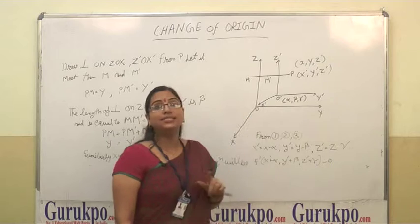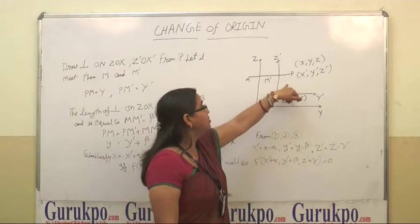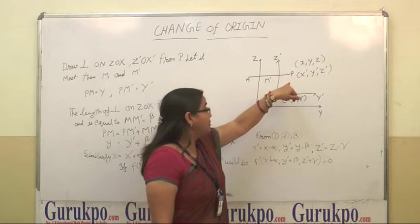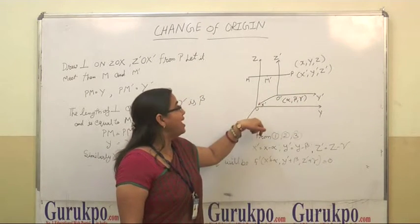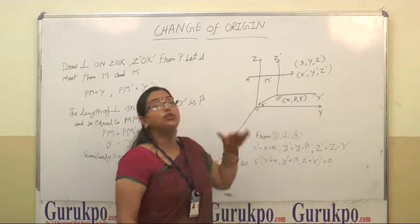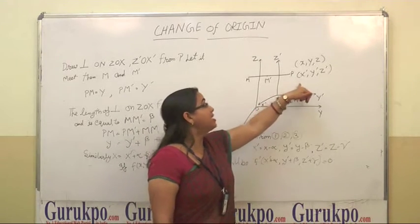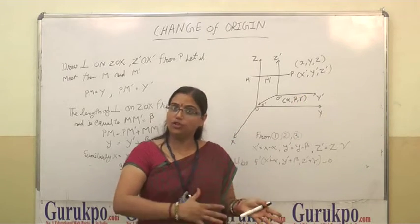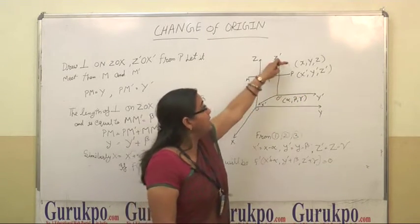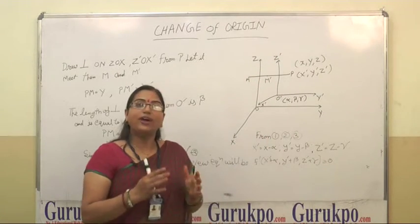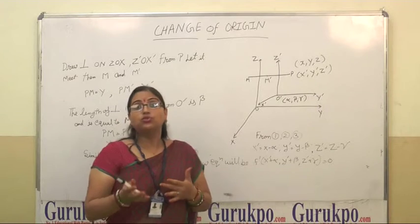So for finding this relation, we have to take a point P. The axis of P in the original axis will be XYZ and the axis of P in the new change axis will be X'Y'Z'. Because we change the position of origin, now we have to find the relation between XYZ and X'Y'Z'. For finding this relation, what we have to do?